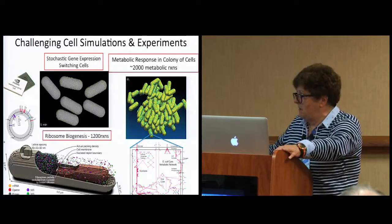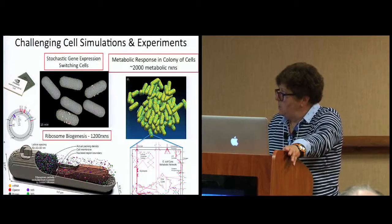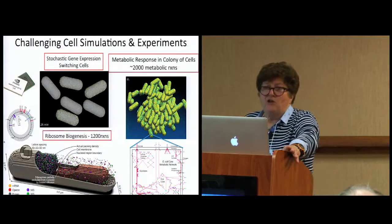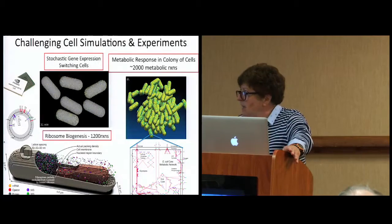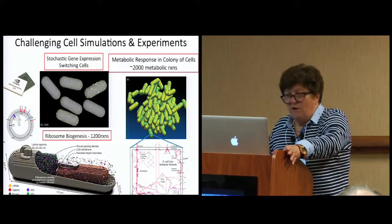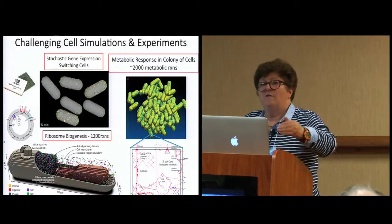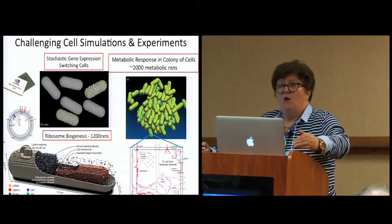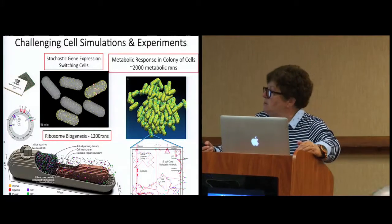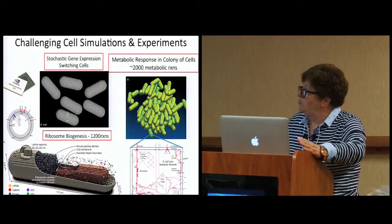All right, so here's some of the problems that we've done. We started off by looking at a well-known system. It's called the LAC genetic switch. It was rather modest in that it only had like 23, 24 reactions, maybe 10 species. And now we're down here and doing ribosome biogenesis. We have 1200 reactions. We start with the transcription event of the operons for the rRNA as well as the proteins. We translate the proteins. We look at the assembly of the ribosomes, and then we can compare that to experiments.